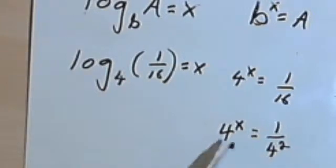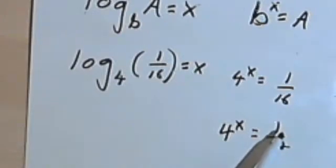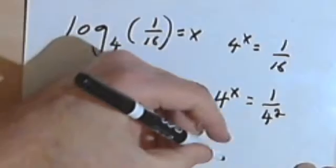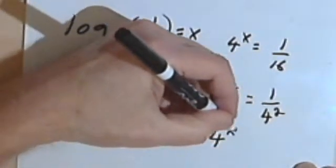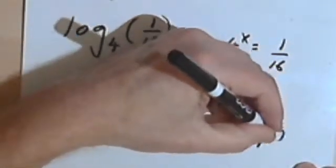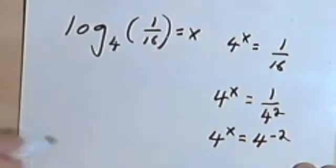And now I want both these sides to look the same as much as possible. So I'm going to take that 4 squared and move it into the numerator. I'll just change the 2 squared to a negative 2. So I'm going to get 4 to the x equals 4 to the negative 2. So that must mean that x equals negative 2.